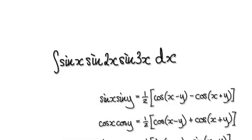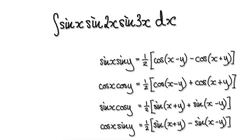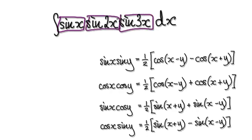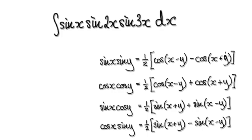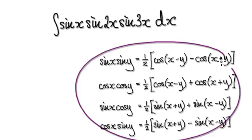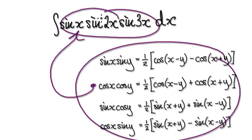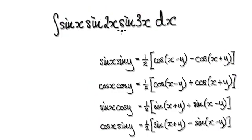In this video we're going to try to integrate this. Here you've got one block of sin x times this block times this block here. We're going to try and integrate the whole thing using the product-to-sum identity.